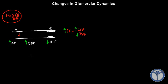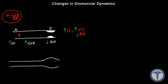Now let's say the question tells us there is vasodilation on the efferent arterioles. Again, this is our afferent, this is our efferent. We need to know what's going to happen to filtration fraction, GFR, and renal plasma flow.